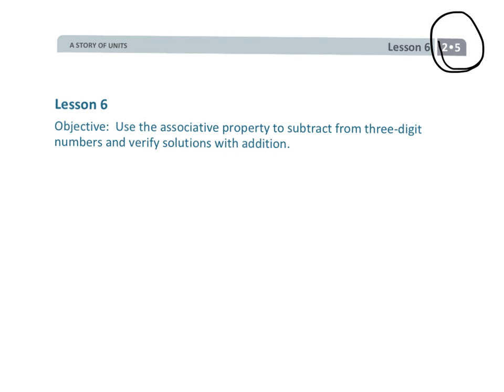All right, this is grade 2, module 5, lesson 6, where we are going to be using the associative property to subtract. And really the purpose of the associative property in this lesson is to make it so that we are subtracting by a milestone number or a landmark number so that our subtraction problem becomes easier than the given problem. I think it's easiest for me to explain it to you by just showing you some examples. So let's get going.